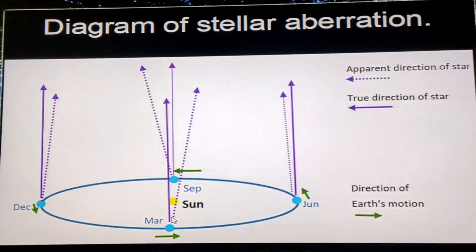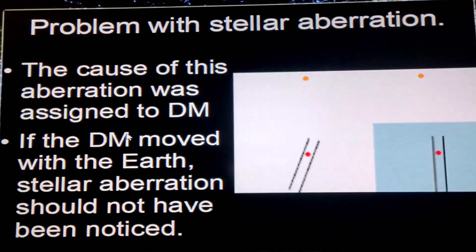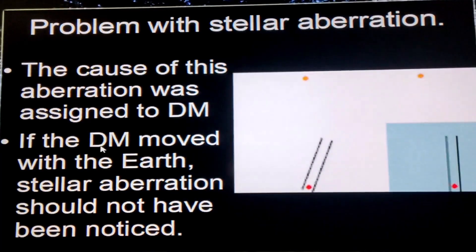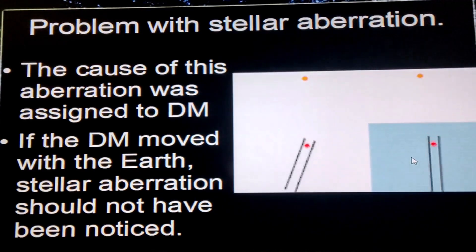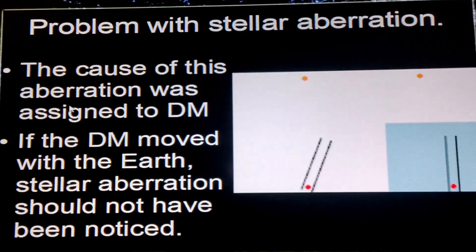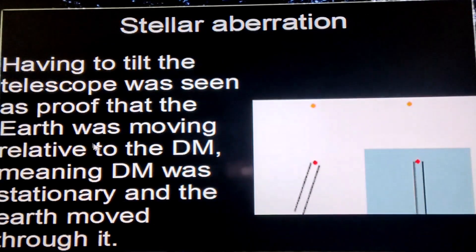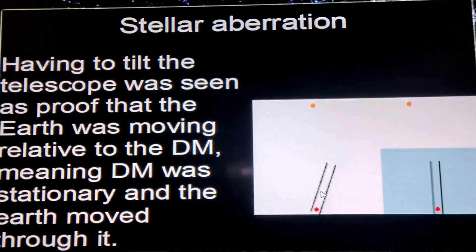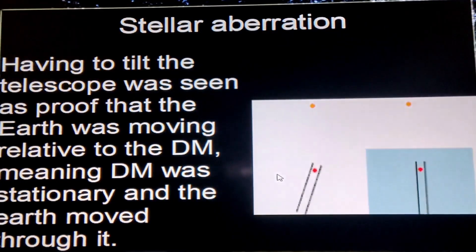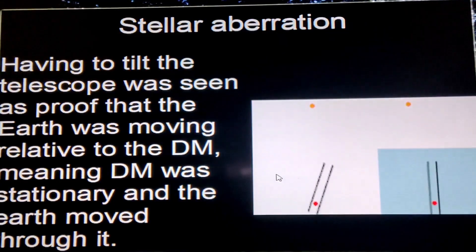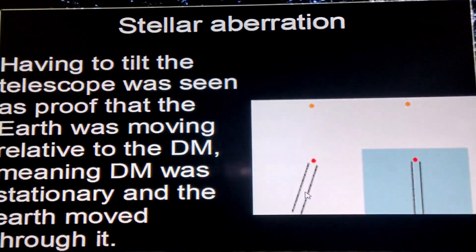The cause of this aberration was assigned to dark matter. If dark matter moved with the earth — if dark matter was stationary with the earth — you should not see aberration. The fact that you have to tilt the telescope proved that the earth was moving relative to dark matter, whatever was outside of it. So there was relative motion between the telescope and space itself.